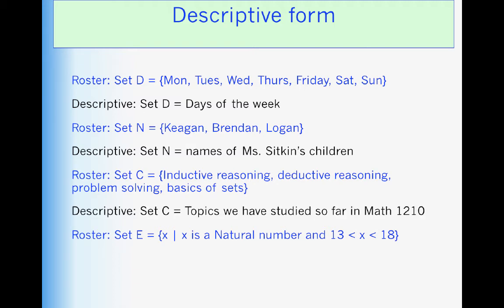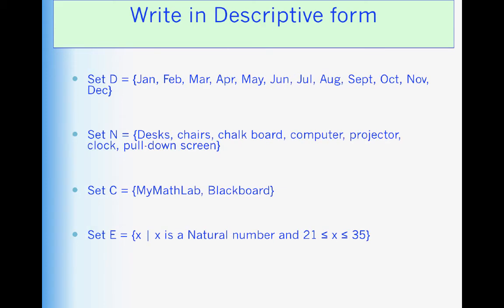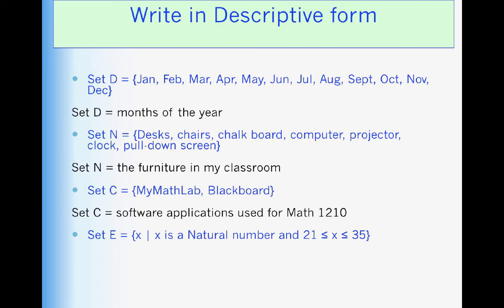Set C, I would call that the topics that we've studied so far in Math 1210. But you could describe that in other ways as well. And finally, set E, all natural numbers between 13 and 18. Now try writing these in descriptive form. Pause. And then come back and I'll show you what I wrote. Months of the year. Furniture in my classroom. Software applications for Math 1210. And the natural numbers between 21 and 35.